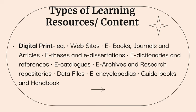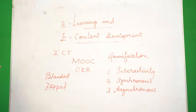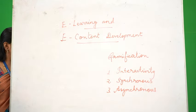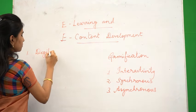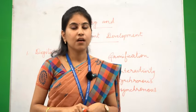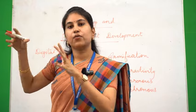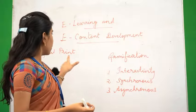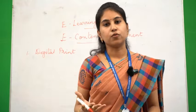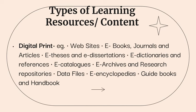When we talk about the types of digital content, the number one is digital print. Digital print is very much similar to the usual printed materials we follow in conventional classrooms. The only difference is that digital print can be available in the form of e-books or mobile applications where you can download and study. We can also include hyperlinks, which when clicked take you to another page. Other examples of digital print include e-journals, e-newspapers, websites, e-catalogues, e-archives, and research repositories.